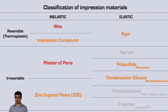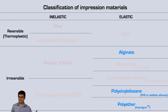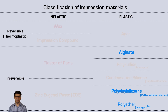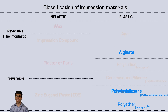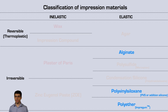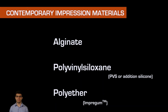Now for the materials we're going to use on a daily basis — the irreversible elastic, or elastomeric impression materials. These will be alginate, which is probably the most cost-effective material for diagnostic impressions, and the materials for final impressions: polyvinyl siloxane (PVS), also called addition silicone, and polyether. We're going to explore these more in depth.